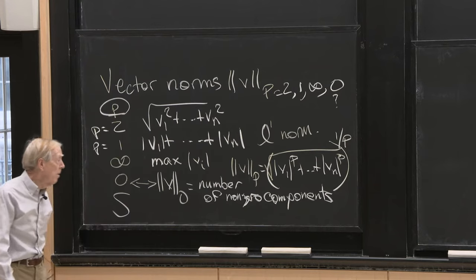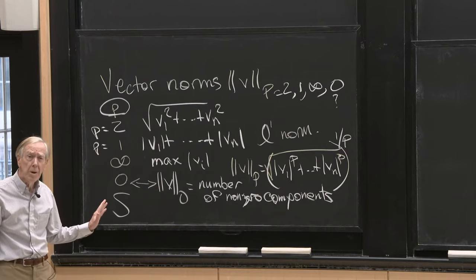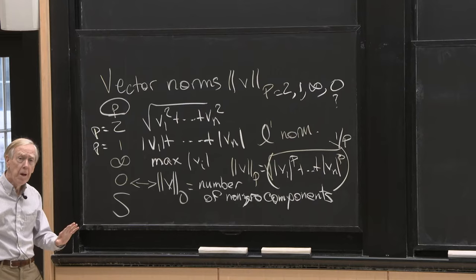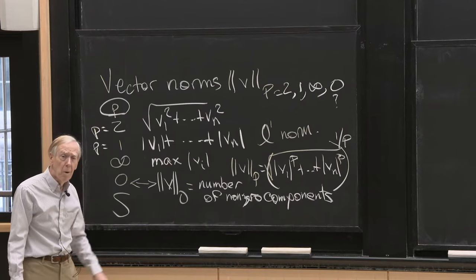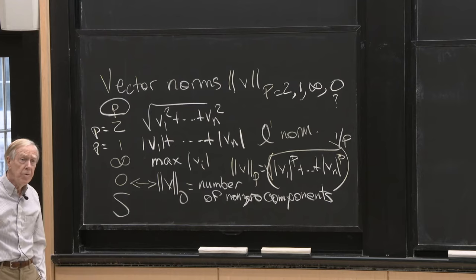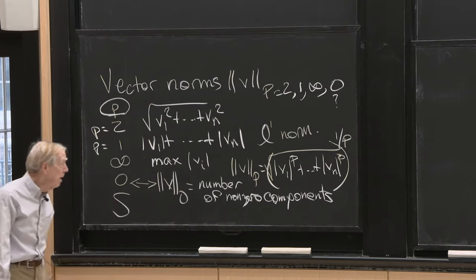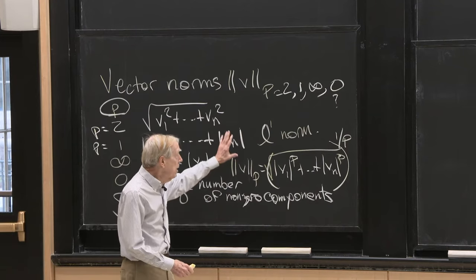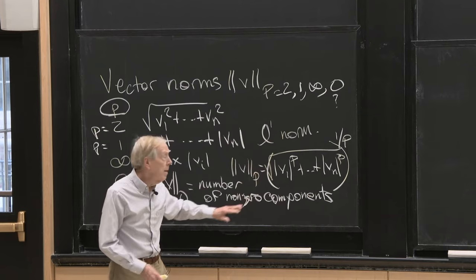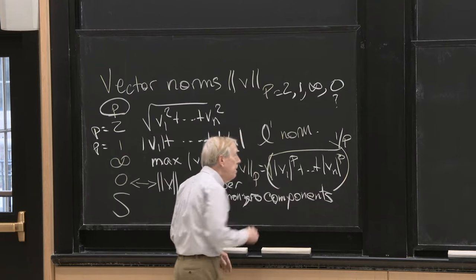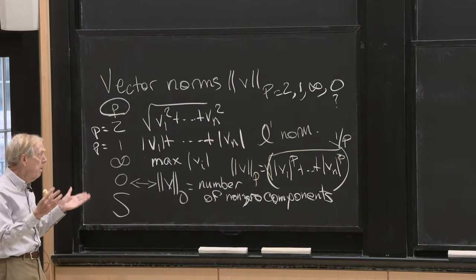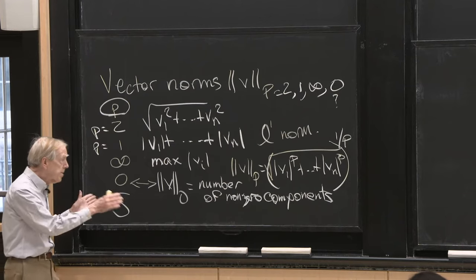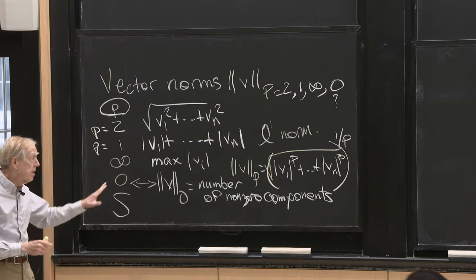But now, I claim that's not a norm, the number of non-zero components. Because what's the norm of 2v compared with the norm of v, the 0 norm? It's the same. 2v has the same number of non-zeros as v. So it violates the rule for a norm. So I think with these norms and all the p's in between, actually the math papers are full of let p be between 1 and infinity, because that's the range where you do have a proper norm.